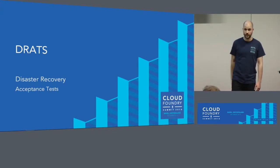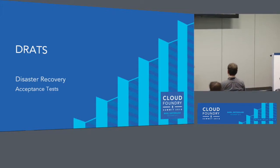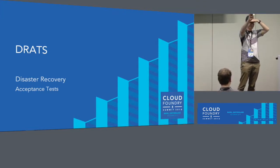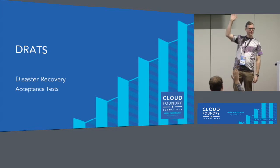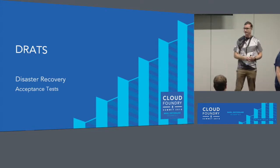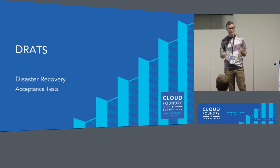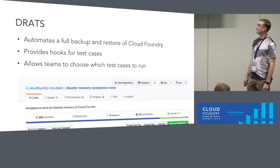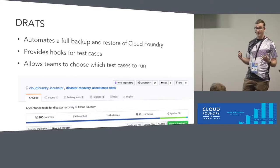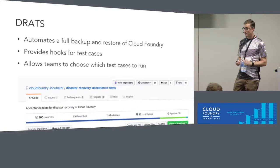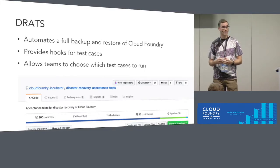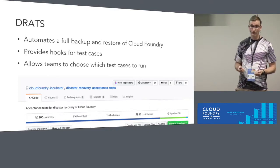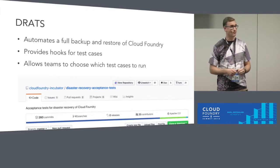I'm going to hand over to Josh. He's going to talk about the actual framework, about DRATS. Thank you, Emmanuel. Has anyone here run BBR? Oh, actually quite a few. Cool. So I'm going to talk to you about DRATS and the shared tooling we created to drive out this cross-cutting feature. DRATS is this acceptance test suite that automates a full backup and restore. Each test case has different hooks it can use for its setup and confirming how something should work. It allows teams to focus on what's important to them. The code is open source — you can find it on GitHub.